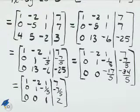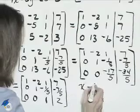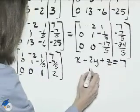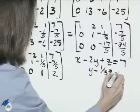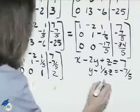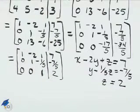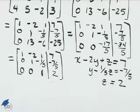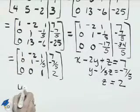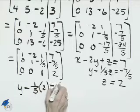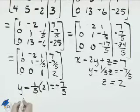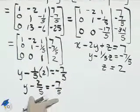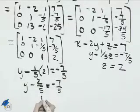And we're ready to set up the three equations. The first equation is x minus 2y plus z equals 7, from the first row. The second row gives y minus 1 fifth z equals negative 7 fifths. And the last row gives z equals 2. Next, we substitute z equals 2 into the second equation: y minus 1 fifth times 2 equals negative 7 fifths. 1 fifth times 2 is 2 fifths, so y minus 2 fifths equals negative 7 fifths. Adding 2 fifths to both sides gives us negative 5 fifths, which means y equals negative 1.